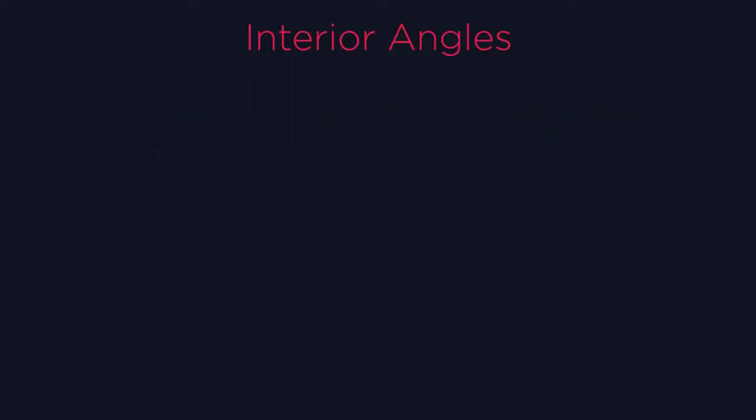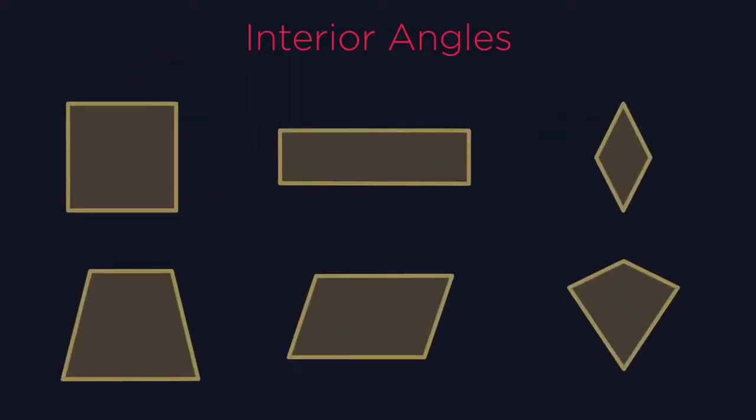We're going to have a look at these six quadrilaterals in more detail. Before we start, did you know that squares, rectangles and rhombuses are all types of parallelograms.